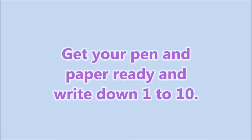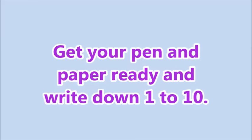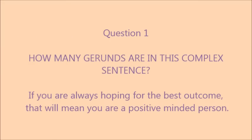Also, don't forget there are some adjectives that have -ing at the end too. Get your pen and paper ready — pause the video if you like and write down one to ten. Question one: how many gerunds are in this complex sentence? 'If you're always hoping for the best outcome, that will mean you are a positive-minded person.'